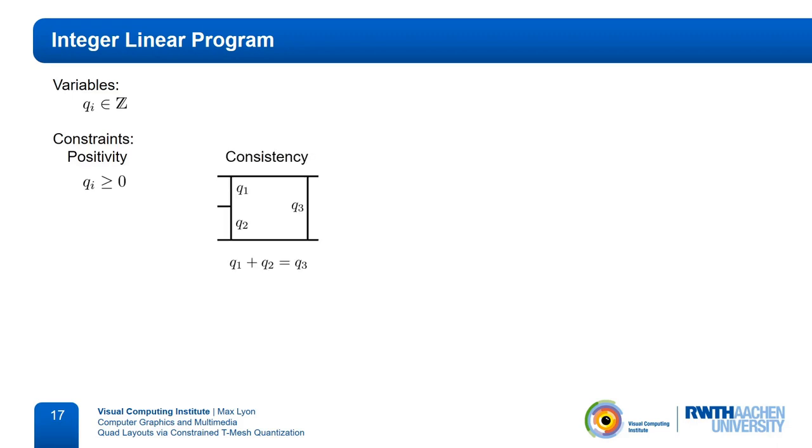For consistency, the patches of the t-mesh need to be rectangular, which means the sum of the arc quantizations on one side needs to be equal to the sum on the other side. This is a simple equality constraint.